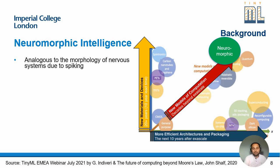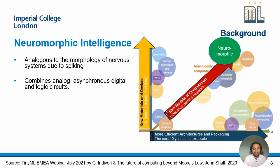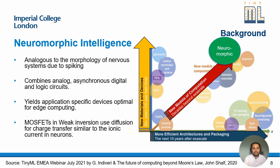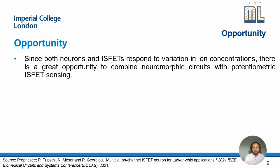We as engineers love new models of computation, and neuromorphic is leading the way there. It is analogous to the morphology of the nervous system due to its spiking. It combines analog, asynchronous digital, and logic circuits, yielding application-specific devices optimal for edge computing. Importantly, MOSFETs in weak inversion use diffusion for charge transfer, which is similar to the ionic current in neurons. Since both neurons and ISFETs respond to variation in concentrations, there is a great opportunity to combine neuromorphic circuits with potentiometric ISFET sensing.